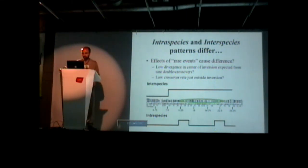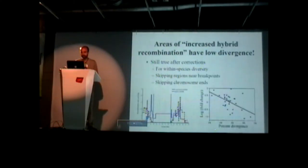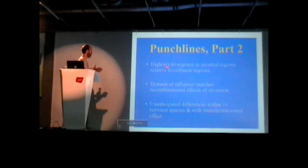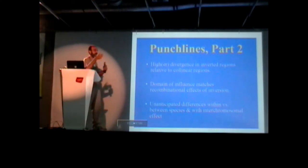Whereas between species, because hybridization is so much lower, you have this long piece which is all at high divergence. Going a little bit slower. So the punchline for this: we have high divergence in the inverted region as well as typical other regions. The part of the chromosome that has this high divergence matches the recombinational effects of the inversion. And we have this unexpected difference within versus between species. And I think it has to do with how frequent the hybrids are.